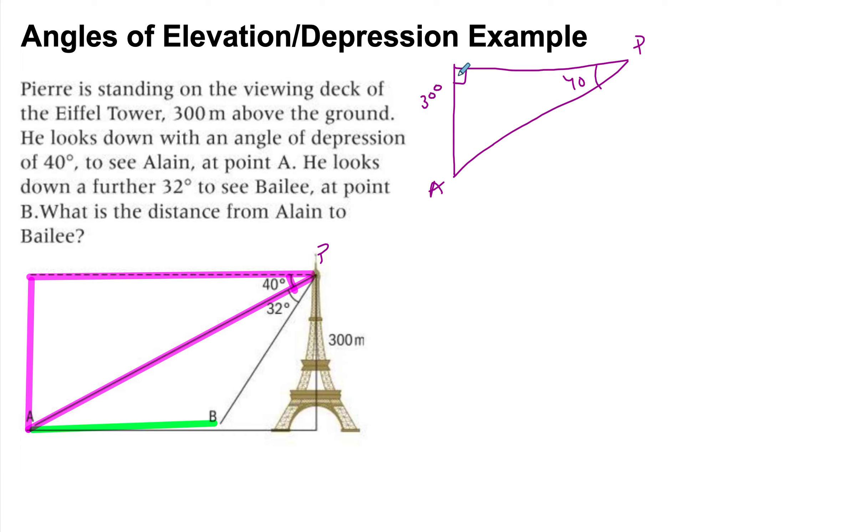And it would be ideal if we know the distance from Alain to Pierre. So the distance that we find here is the same distance as we find at the bottom. So it's exactly the same. So this distance will be the same distance here.